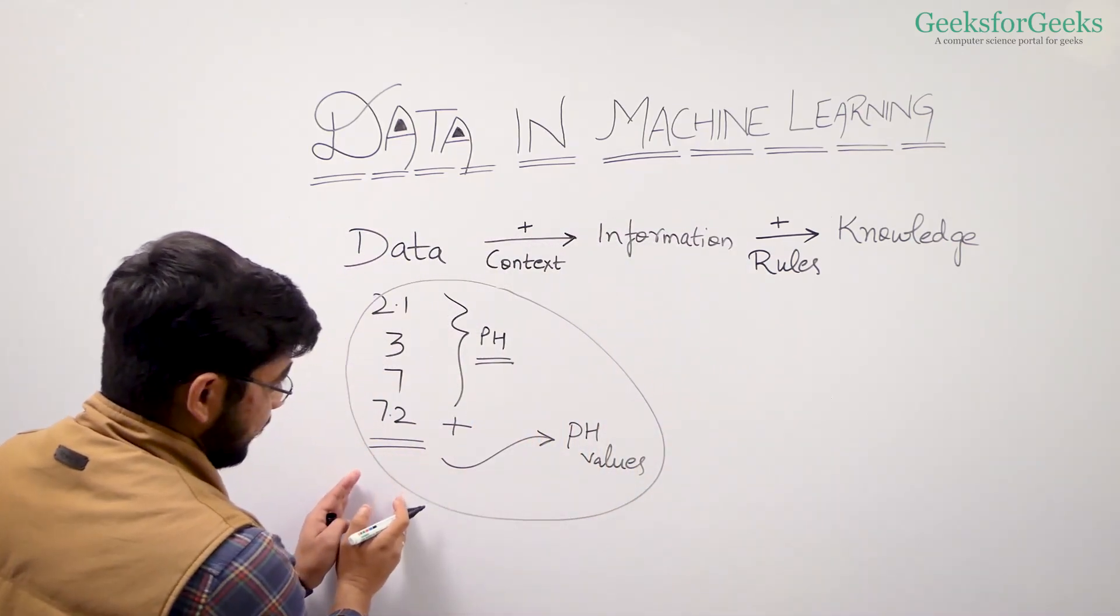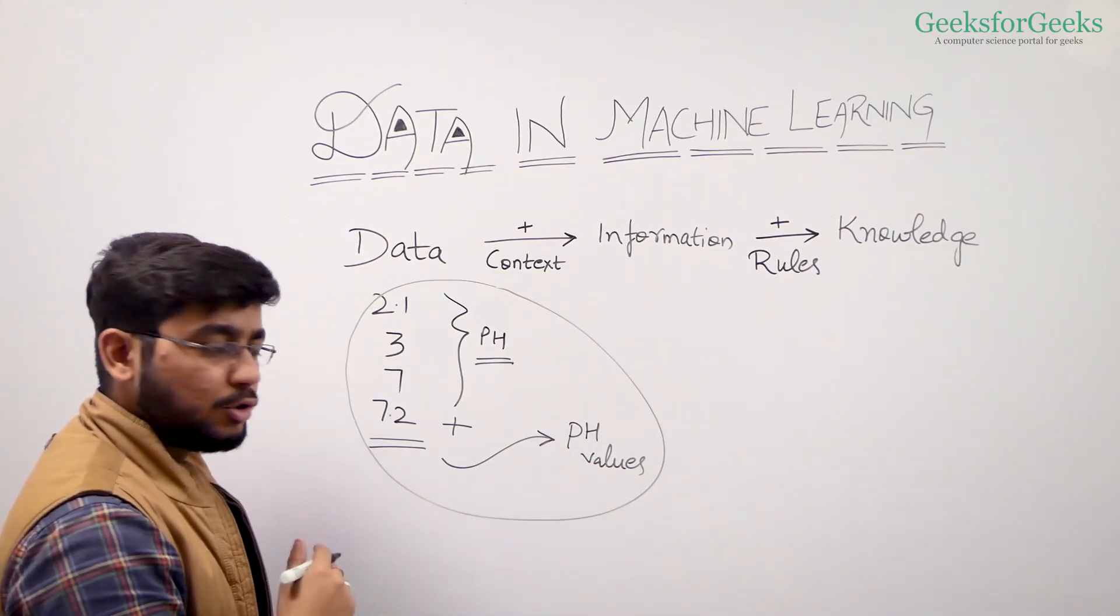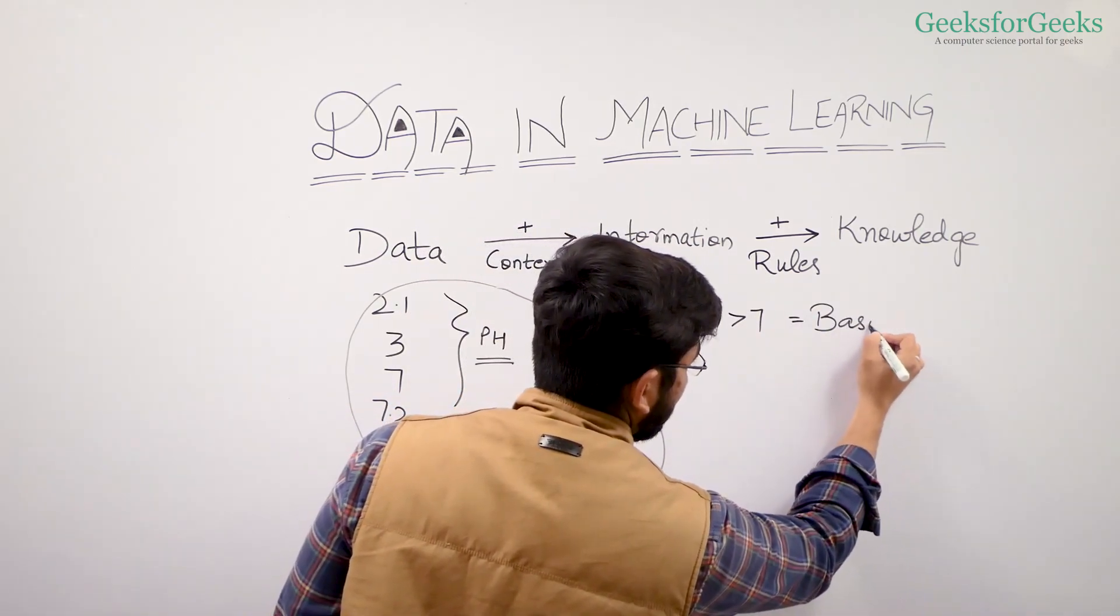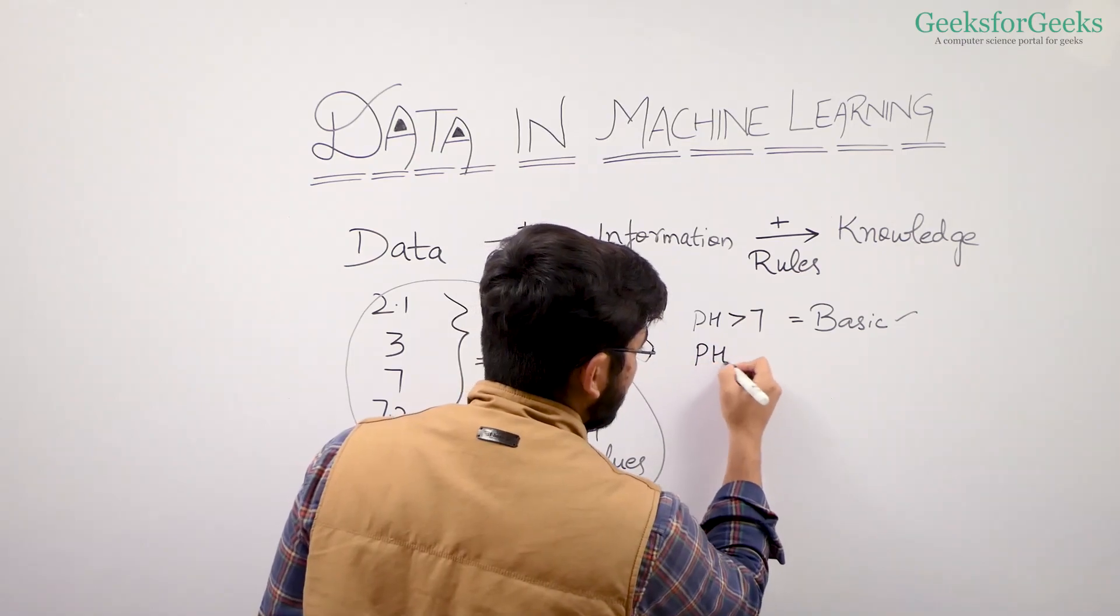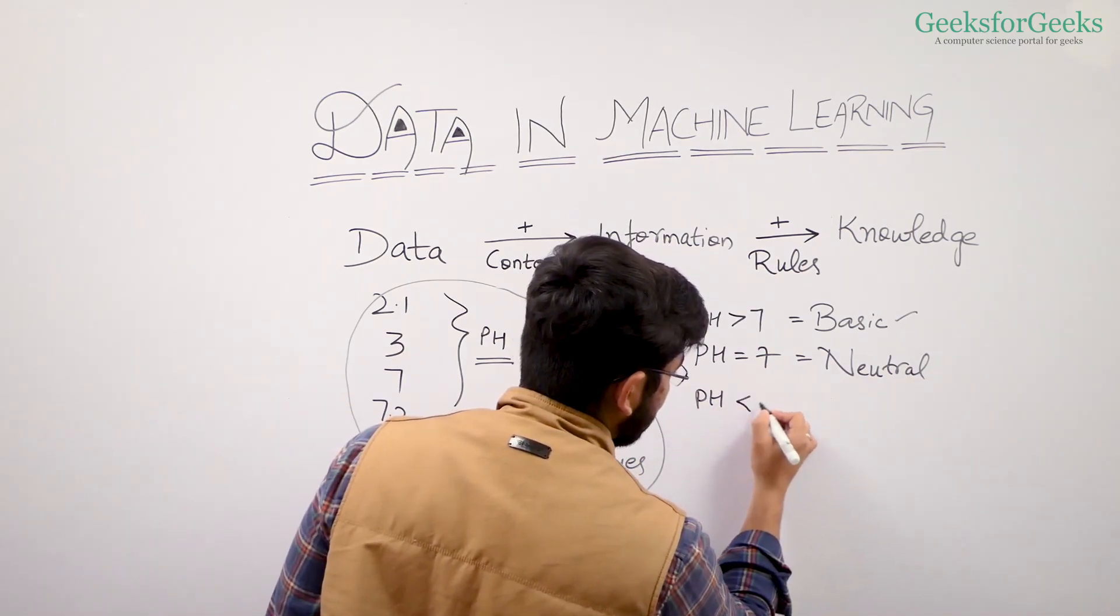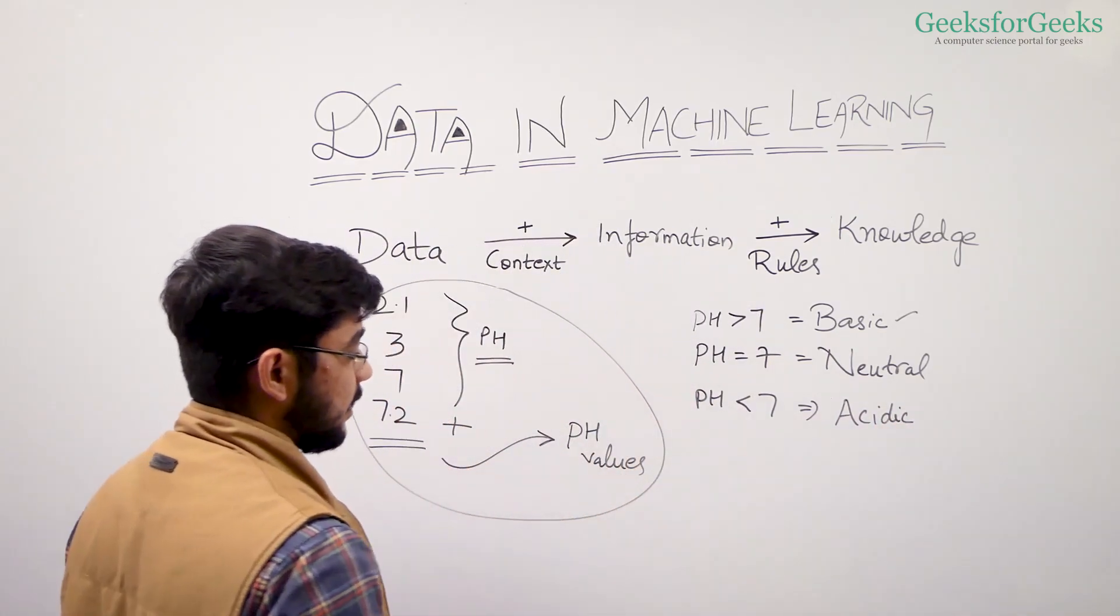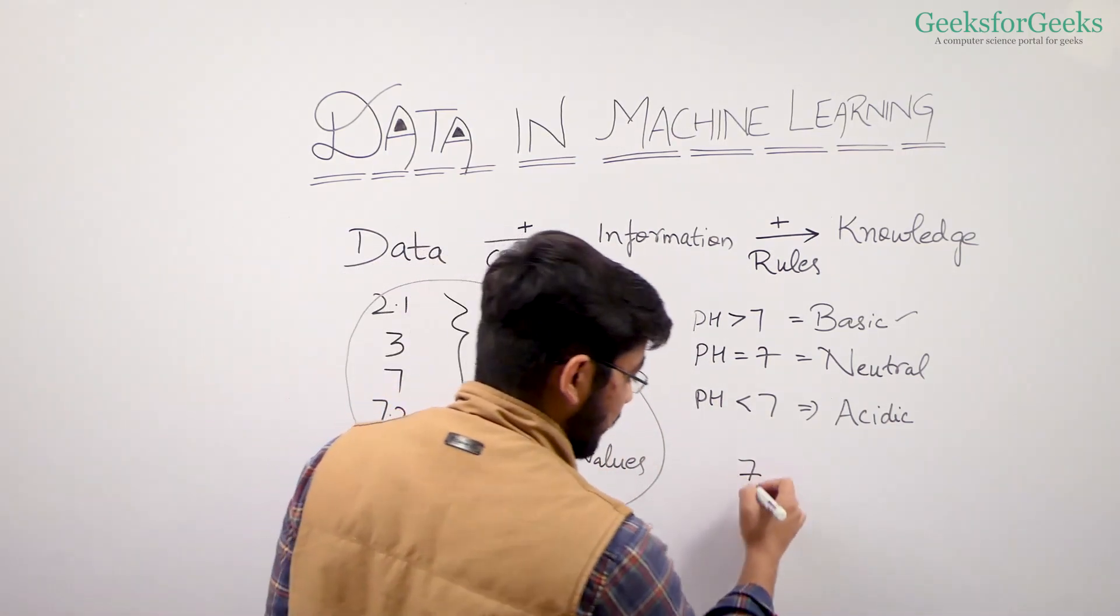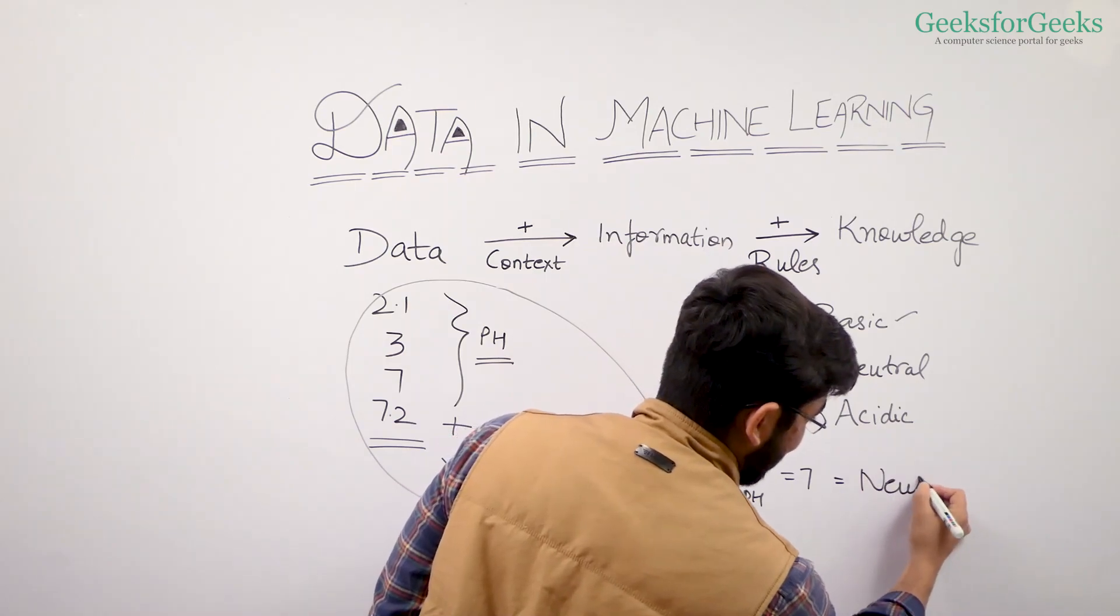So this was the data. We added context and we built up our information. Now I'm adding certain rules. What are those rules? If pH value is greater than 7, then it's basic. If pH equals 7, then the substance is neutral. And if the pH value is less than 7, then the substance is acidic. So now if we are given data 7, we say this is the pH value - it becomes information. And since it equals 7, it is neutral - that's the knowledge.